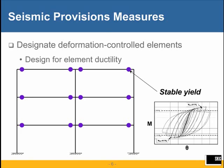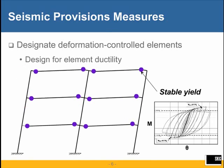These are all ductility requirements. In the example of a moment frame, where the plastic hinge region is expected to undergo stable yield, we do expect the moment connection to behave as indicated in the moment-rotation diagram.